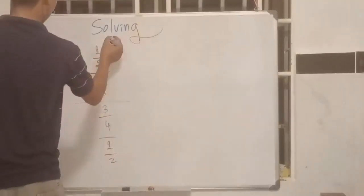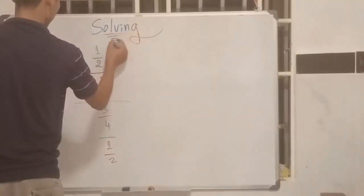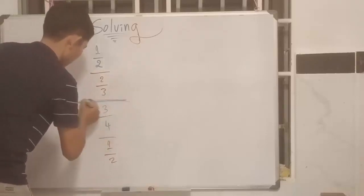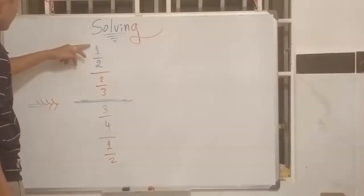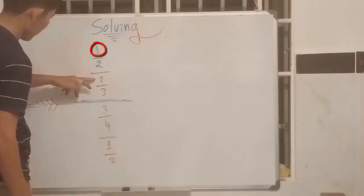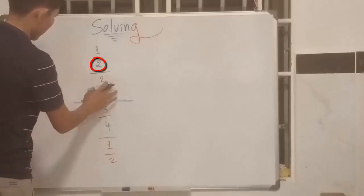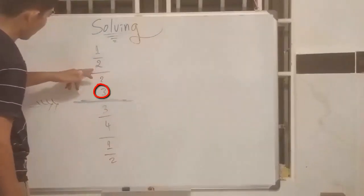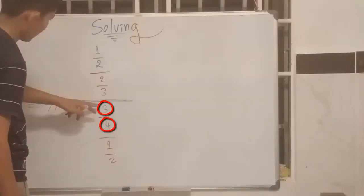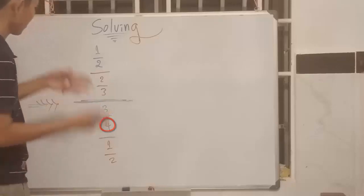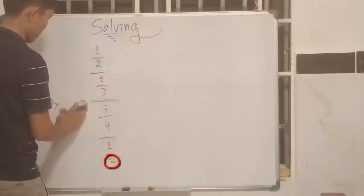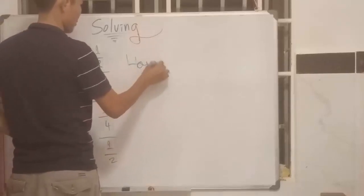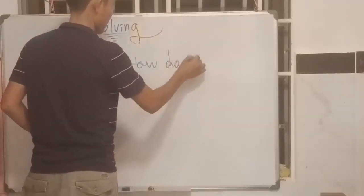Hello together, happy to see you again. Today we show you about this topic — decide by two, decide by three, decide by four, decide by one, decide by two. So now, how do we show this?